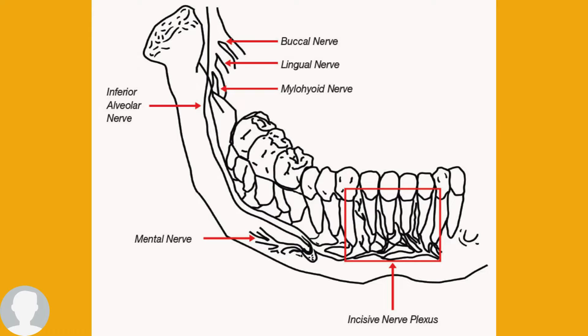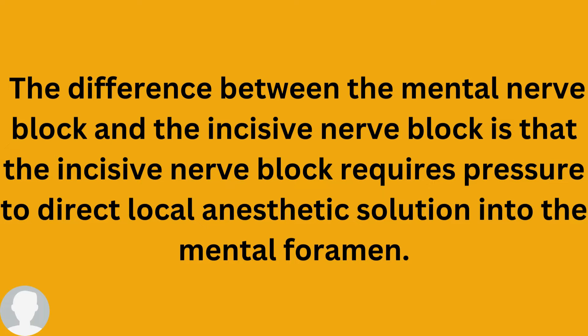As I said in my previous video, if you are planning to give a mental nerve block, between the two premolars you go five to six millimeters deep. In comparison, with the incisive nerve block — between the first premolar and the canal — you will also go five to six millimeters deep. The key difference between giving the mental nerve block and the incisive nerve block is that the incisive nerve block requires pressure to direct the local anesthetic solution into the mental foramen.